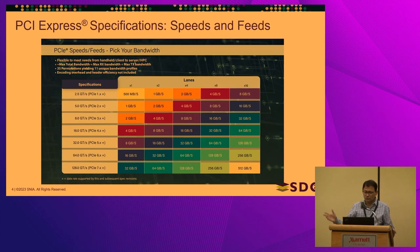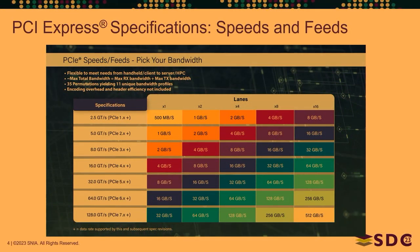This shows the speeds and feeds. We support multiple widths — x1, x2, x4, x8, x16 lanes — and on the rows you have the different data rates, with correspondingly different bandwidth per direction.